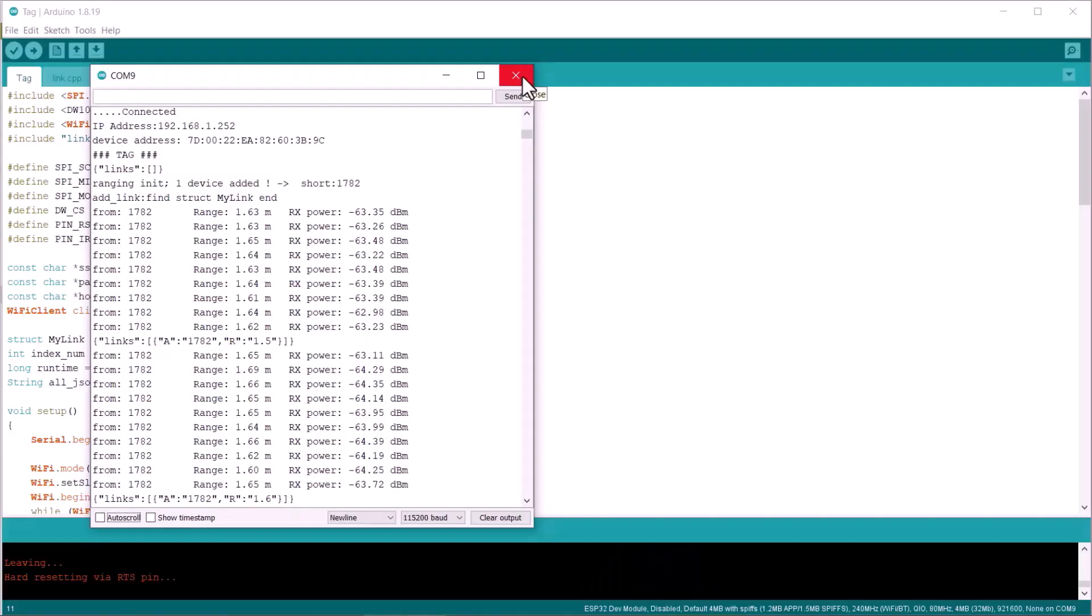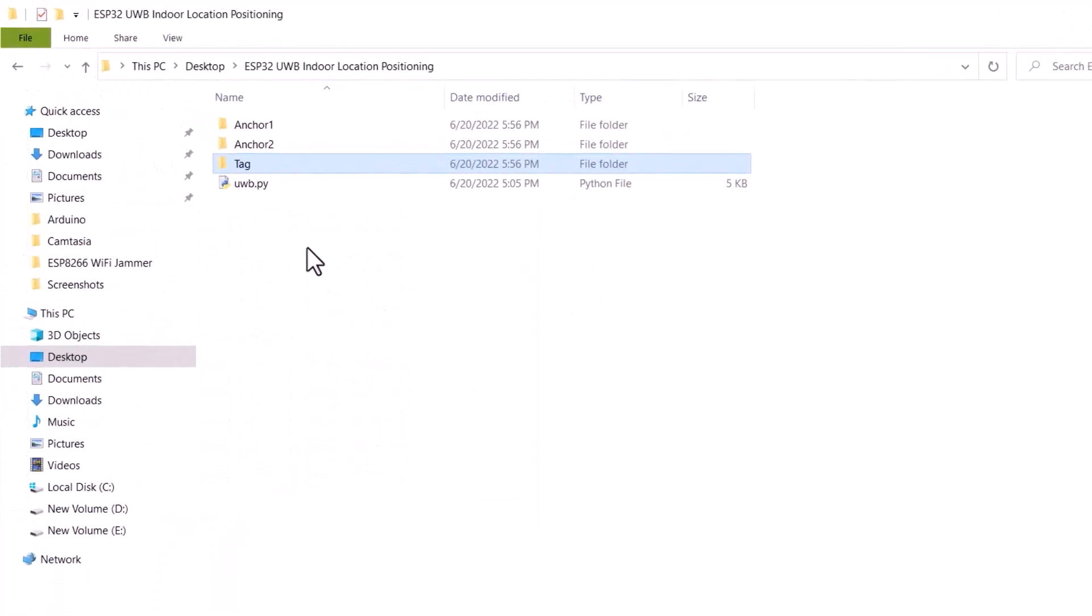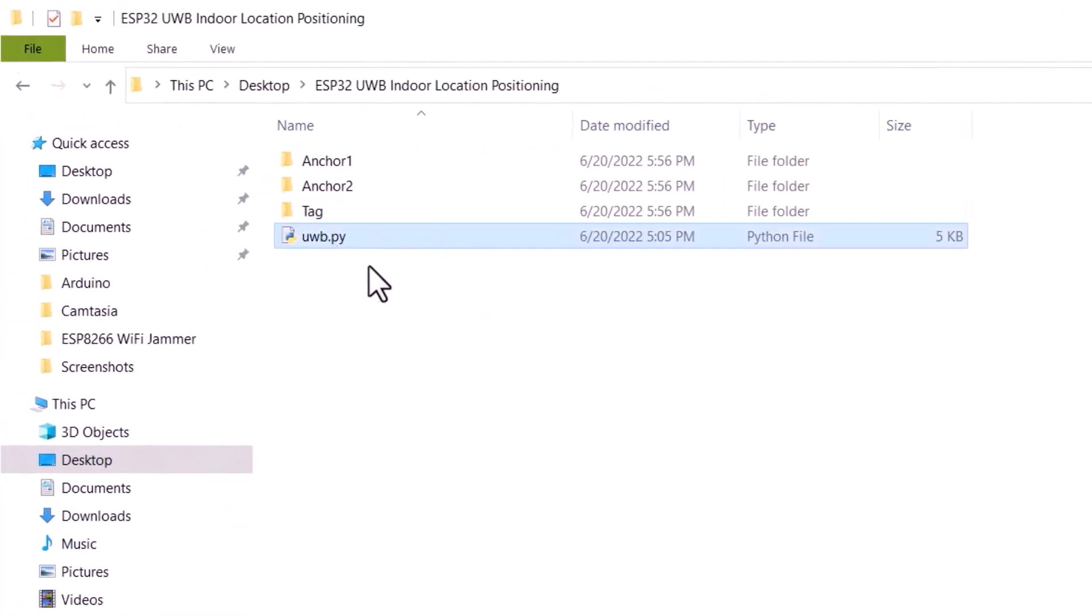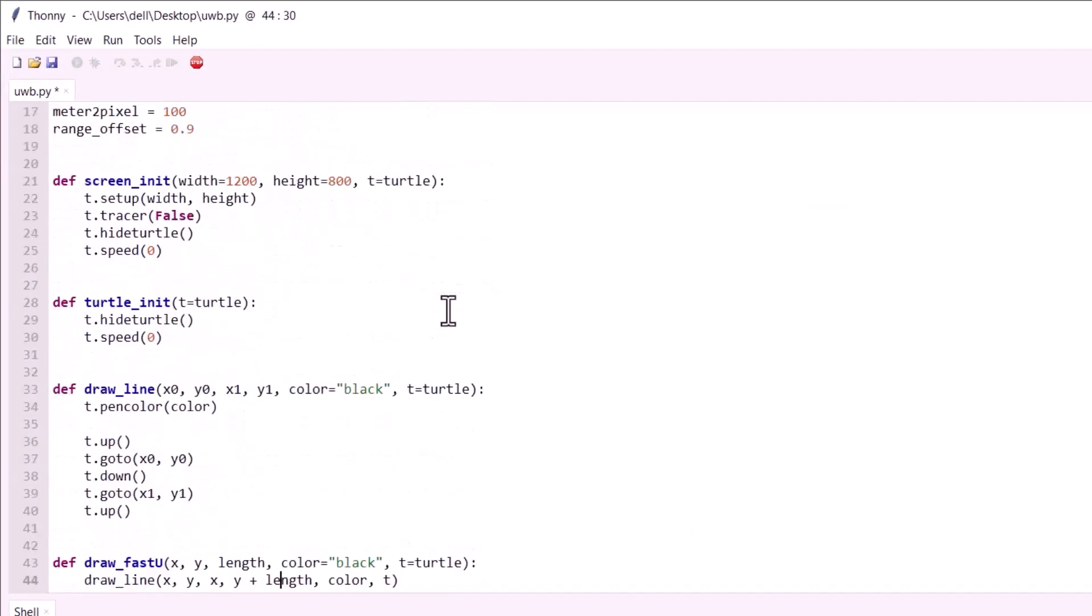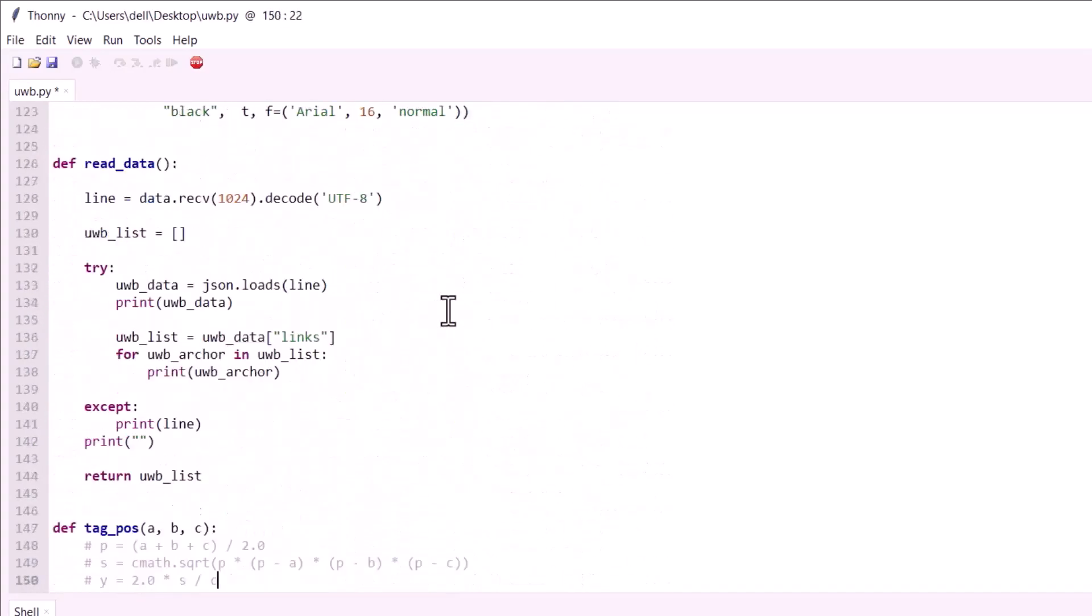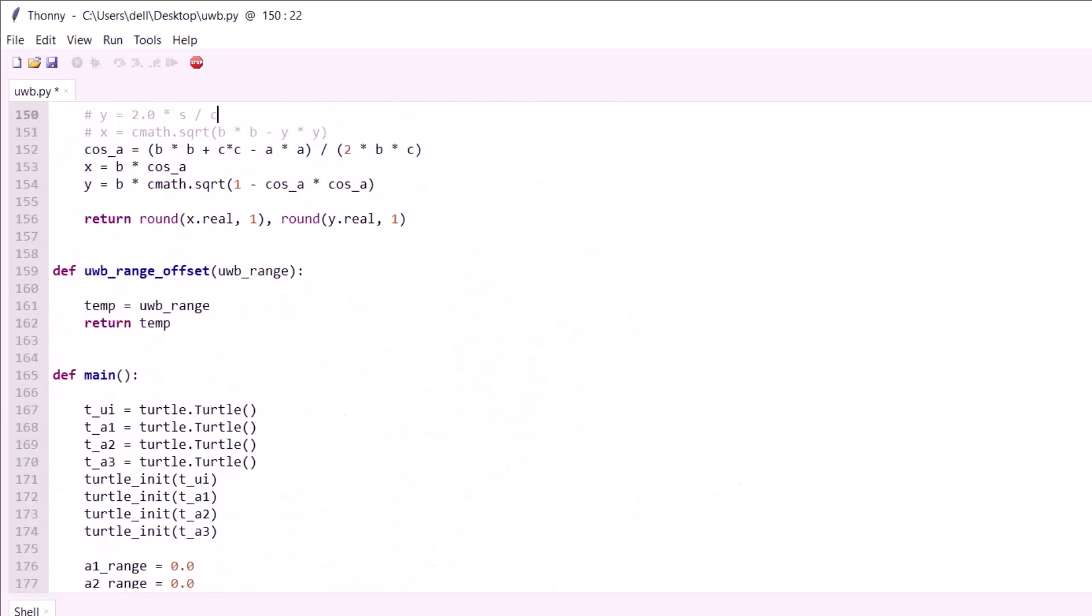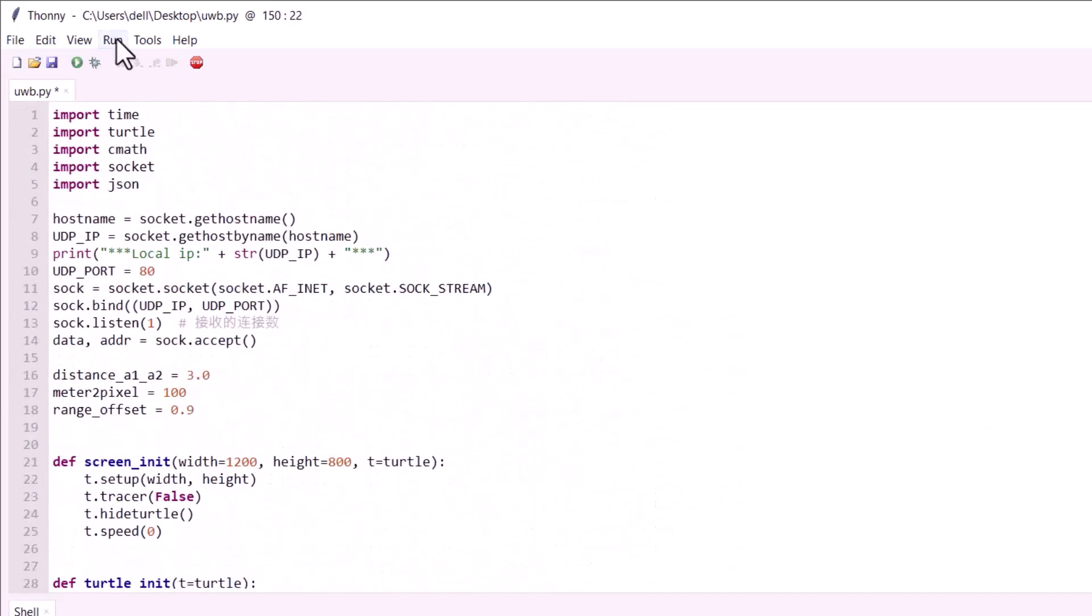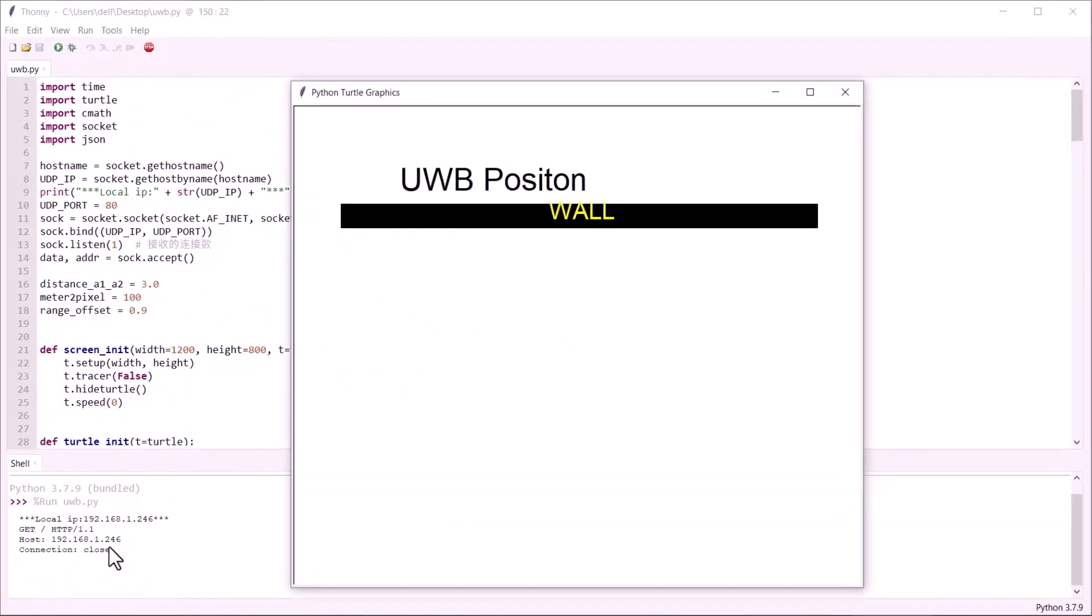Now, what is left is the visualization part. For this, open this Python script using any Python editor like Thonny IDE. This is a simple demo to calculate the position of a tag and graphically display it. We use tkinter to draw. Now, run this script. After running the script, press the reset button on tag module.